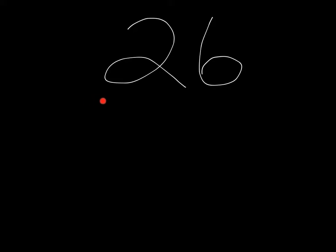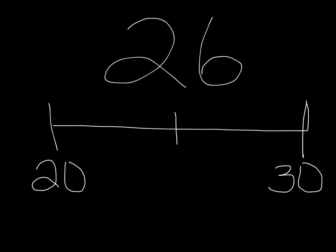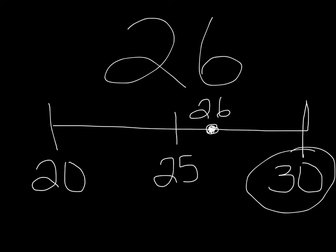Let's work on some practice problems. If I gave you a number like 26, the first thing you're going to want to think about is where would I find 26 on a number line? We should start by looking at our tens column — the 2. So if I was going to put 26 on the number line, I would start with 20 and it would end with the next 10, which is 30. In the middle comes 25, because 25 is halfway between 20 and 30, and 26 would be about right here. So I can see that 26 is going to be closer to 30, rather than 20. So if I was rounding 26 to the nearest 10, my answer would be 30.